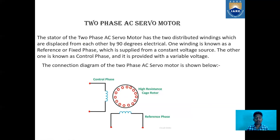The connection diagram of this two-phase AC servomotor is given below. Here you can see one winding is called the control phase and one winding is called the reference phase, which are both inclined at an angle of 90 degrees, and between which a high resistance cage rotor is kept.